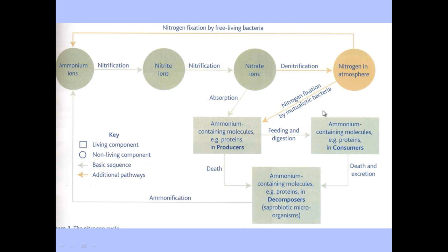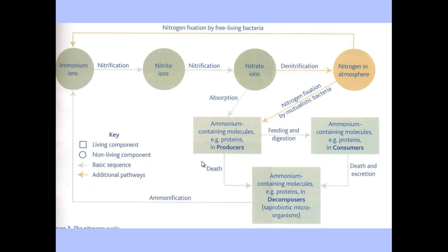If we look at the three places nitrogen is found in living things: we have ammonium containing molecules, e.g. proteins, found in producers. Producers means plants — essentially producers make their own energy from sunlight via photosynthesis, so we could replace that term with plants.